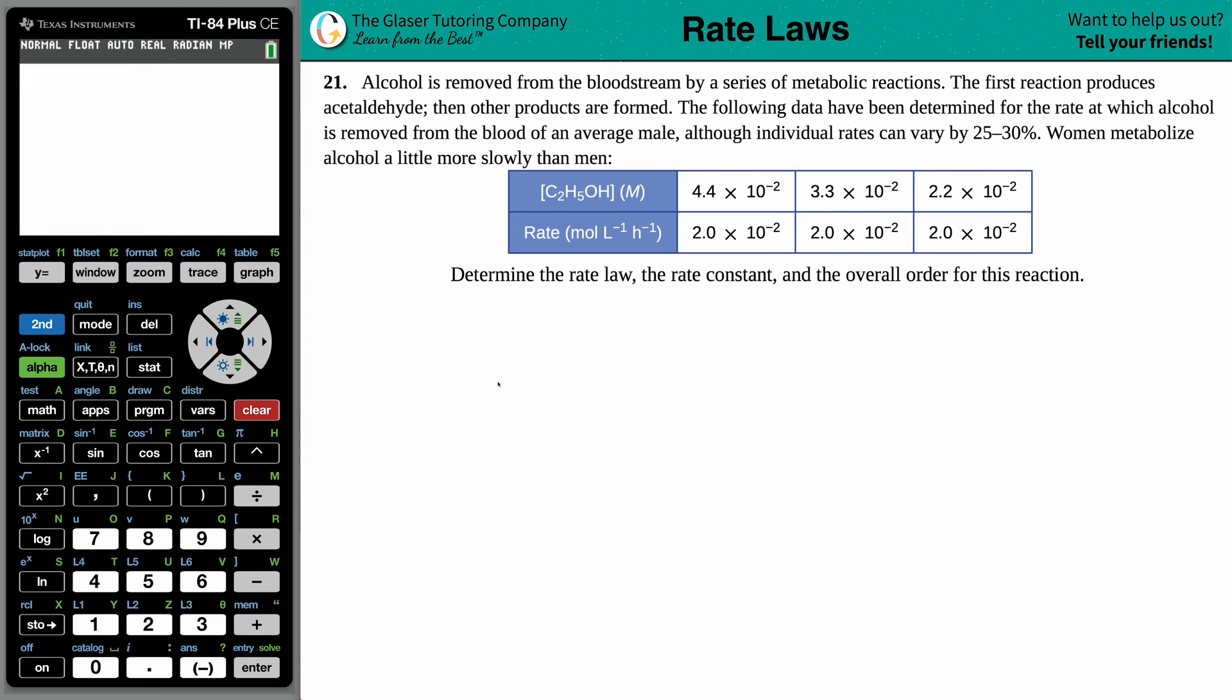Number 21. Alcohol is removed from the bloodstream by a series of metabolic reactions. The first reaction produces acetaldehyde, then other products are formed. The following data have been determined for the rate at which alcohol is removed from the blood of an average male, although individual rates can vary by 25 to 30 percent. Women metabolize alcohol a little more slowly than men.